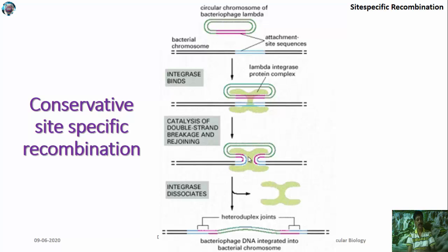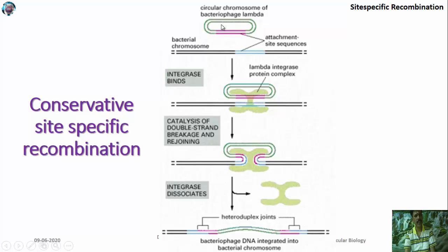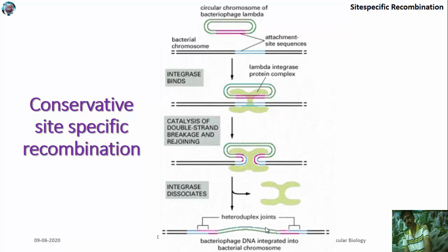The other mechanism is conservative site-specific recombination, which is used to combine the genome of lambda phage into the host genome. The phage sequence is incorporated by recognizing particular attachment sequences. These attachment sequences are recognized by the enzyme integrase, which makes a nick in both strands, then joins both strands. Once the strands are combined, integrase is released and the DNA is incorporated into the host genome.